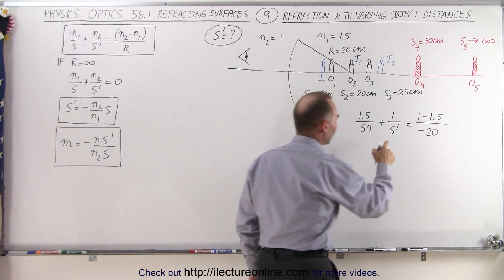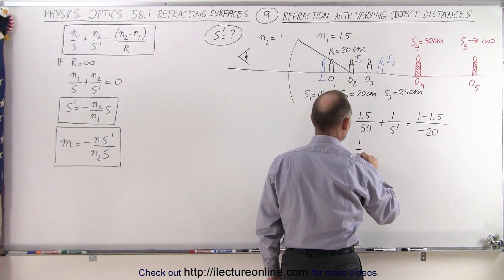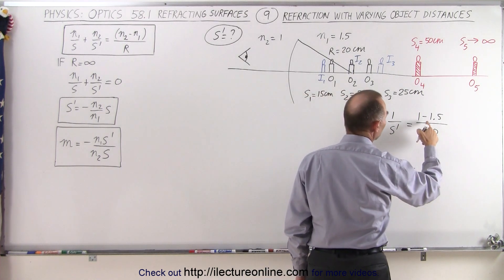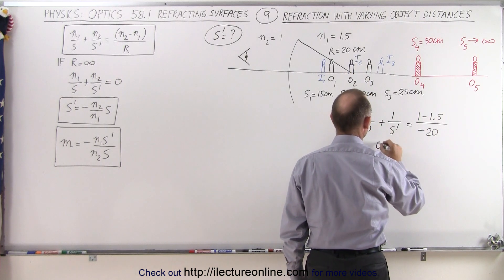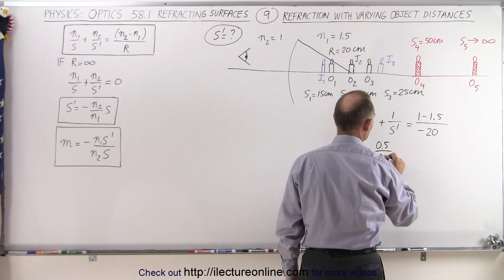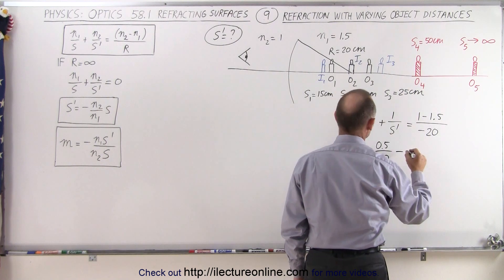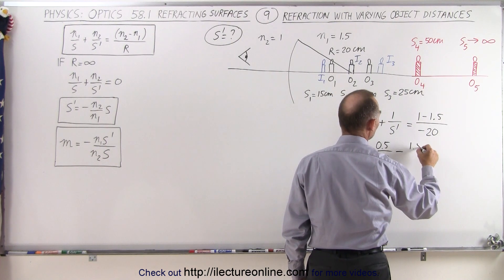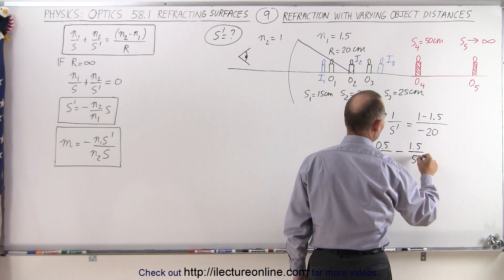Alright, let's solve for this. We have 1 over s prime is equal to: this becomes minus 0.5 over minus 20, or 0.5 over positive 20, minus—move that across—we get 1.5 over 50.